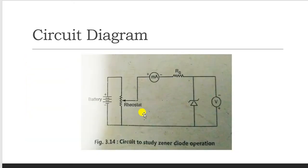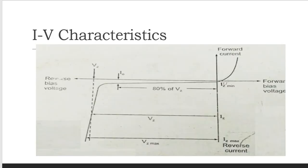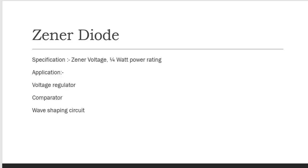The circuit for measuring Zener characteristics includes a battery supply, rheostat, ammeter, the Zener diode, and a voltmeter. In the IV characteristic, during forward bias the Zener behaves like a rectifying diode. In reverse bias, up to about 80% of the Zener voltage it shows the Zener effect; beyond that, the tunneling distance decreases and current rises sharply at the Zener breakdown voltage. Applications of the Zener diode include voltage regulation, use as a comparator, and wave shaping circuits. Specification parameters include Zener voltage and watt rating.